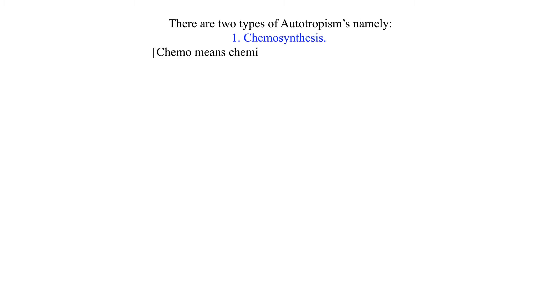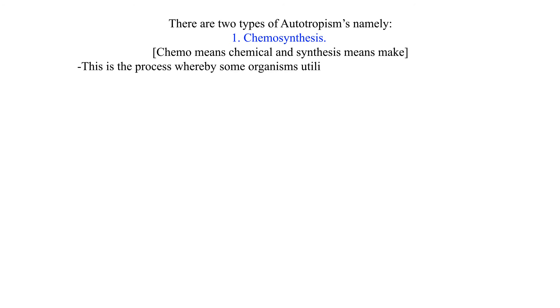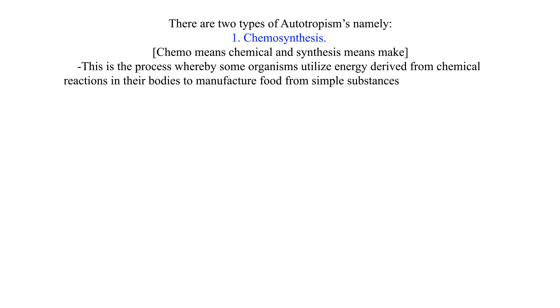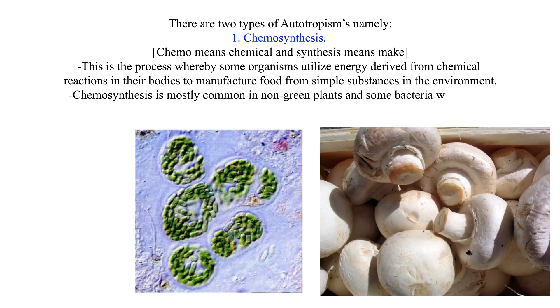There are two types of autotrophism. One: chemosynthesis. Chemo means chemical and synthesis means make. This is the process whereby some organisms utilize energy derived from chemical reactions in their bodies to manufacture food from simple substances in the environment. Chemosynthesis is mostly common in non-green plants and some bacteria which lack chlorophyll that traps light energy from the sun.